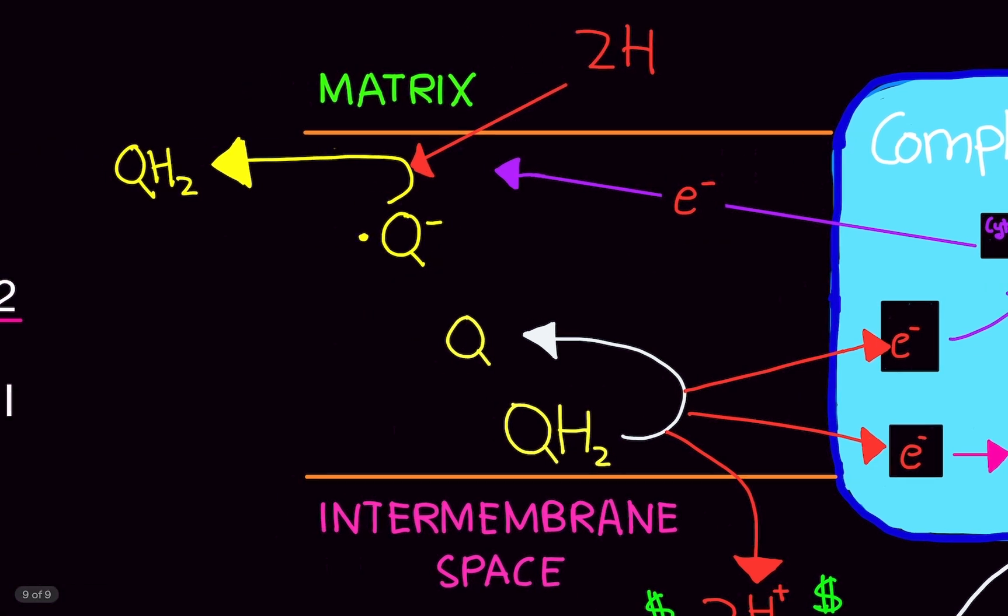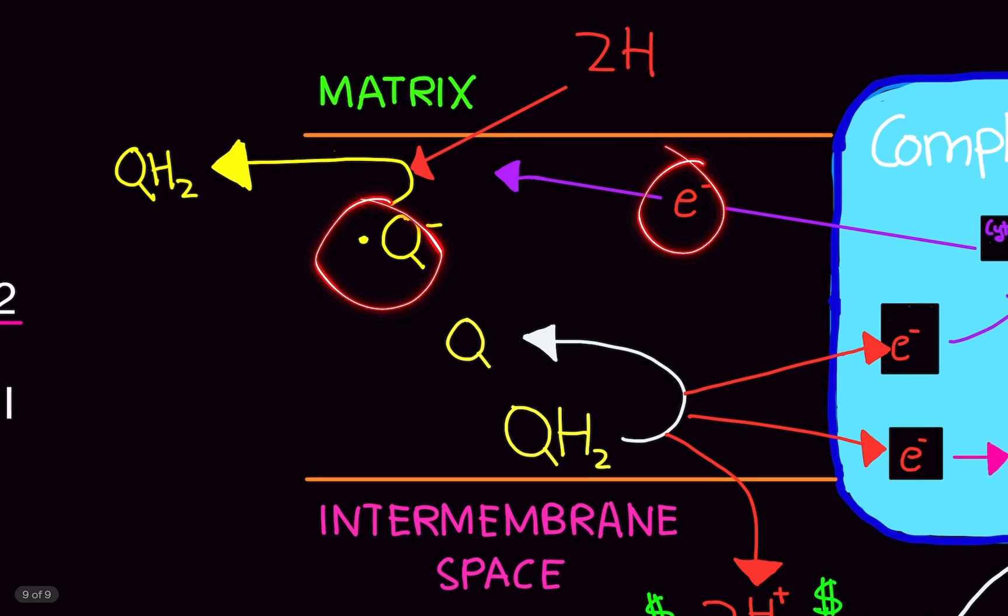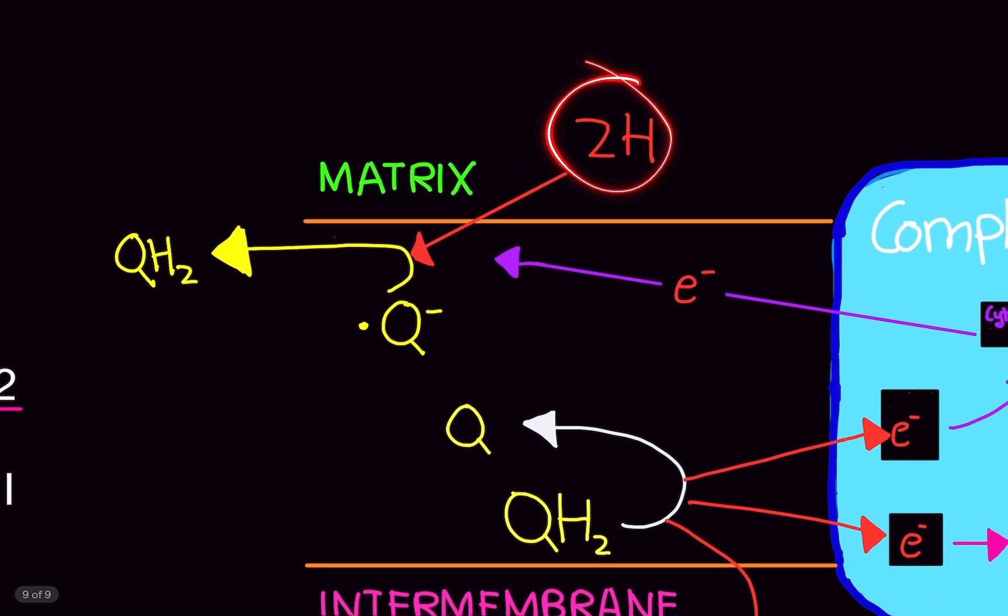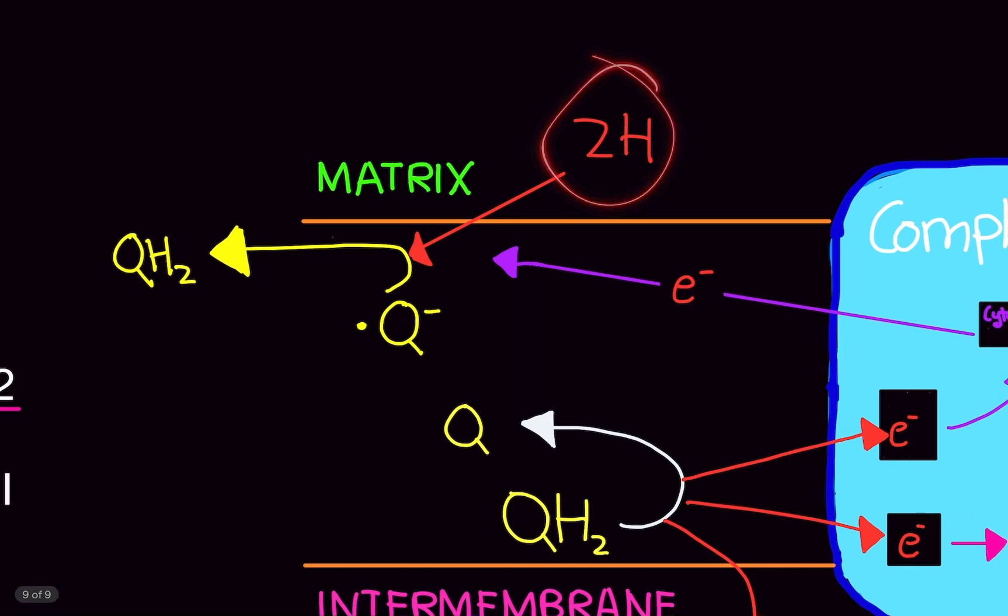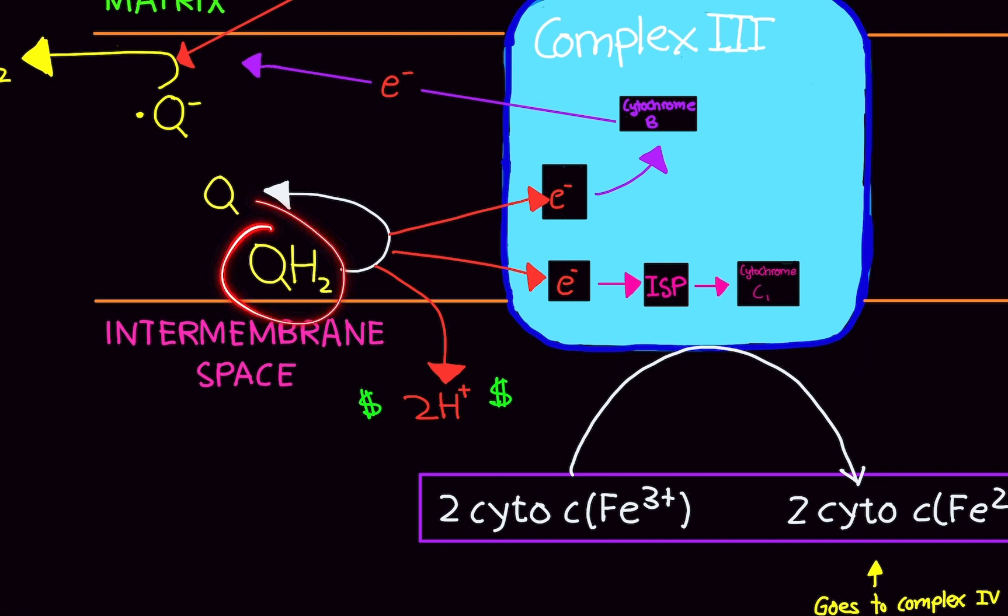Now, with just the electron, semiquinone is going to stay as it is. But we need two protons. So, it's costly. You'll notice, this is costly. We have to put in two protons. But remember, we're also doing this, we also shove two protons into the intermembrane space.